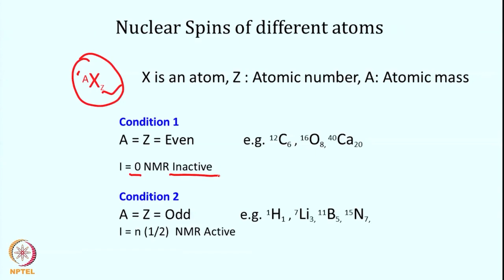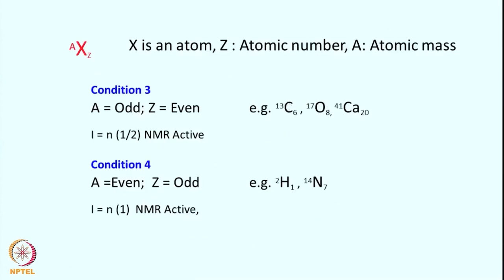Condition 2: if Z is odd and A is also odd — for example H-1 (the most abundant nucleus), lithium, boron, or nitrogen-15 (an isotope of naturally occurring N-14) — all these nuclei where both A and Z are odd have a half-integral spin quantum number (N times one-half) and are NMR active. Condition 3: where atomic mass is odd and atomic number is even — for example carbon-13, oxygen-17, or calcium-41 — these are also half-integral nuclei and are NMR active, amenable for high resolution NMR.